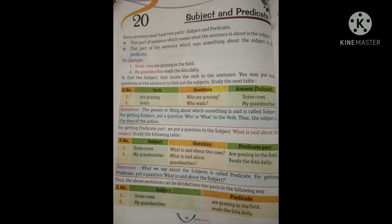Agar aapko subject ka pata na chale, aapko samajh mein na aaye ke subject kya hai, toh aapko ek trick bhi di gayi hai yahan pe. Aap dekh sakte ho. First table mein, verb kya hoga, humara are grazing? Question kya banega, usse who are grazing? Grazing kaun kar raha hai? Toh answer milega, some cows. Toh woh some cows jo hua, woh hua subject.